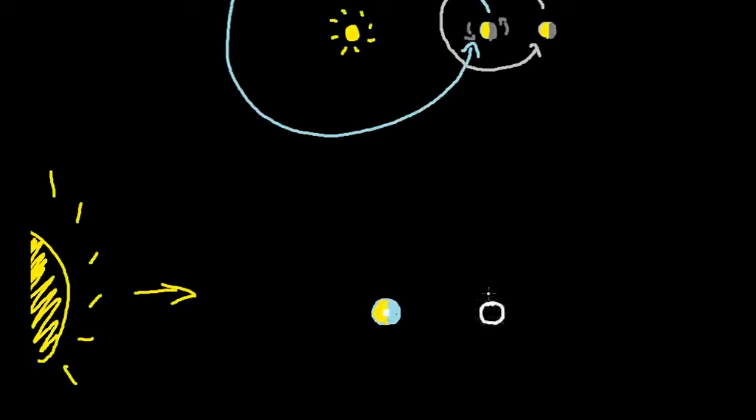So the moon is going to be orbiting around the earth like this. So let's draw the moon in several different positions. So here we go. Sometimes the moon is on the other side of the earth from the sun, sometimes it's right next to it like in these spots.